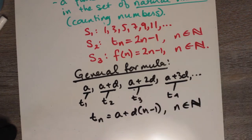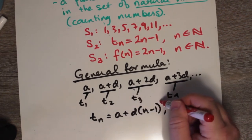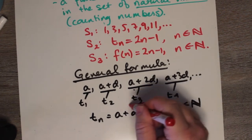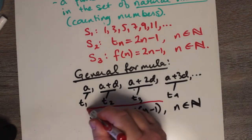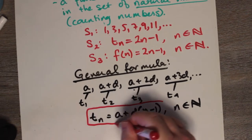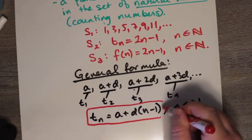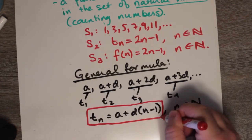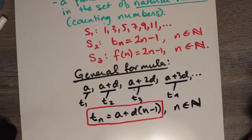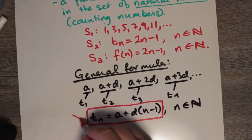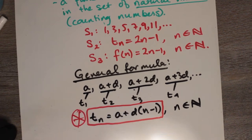TN equals A plus D times (N minus 1). This is a very general and important formula that will cover all arithmetic sequences and take you through any arithmetic sequence.